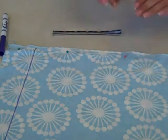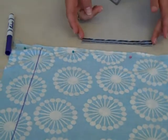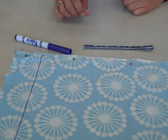For the next step, you're going to need your fabric, a sewing gauge, which is like a mini ruler, and a fabric marker or colored pencil.